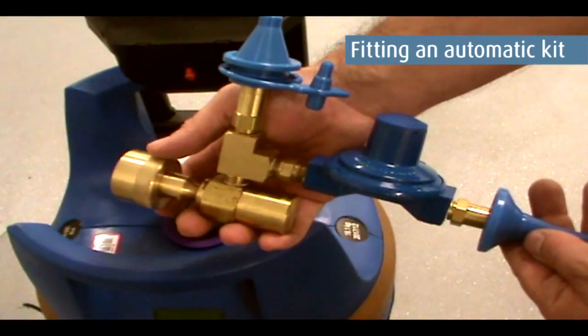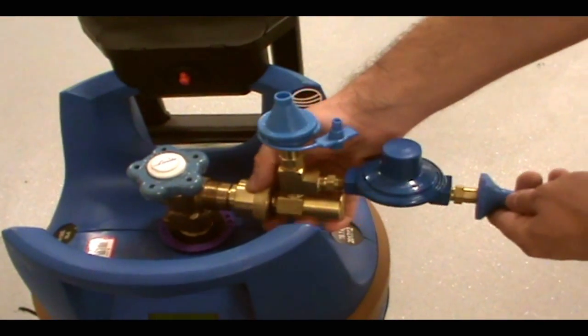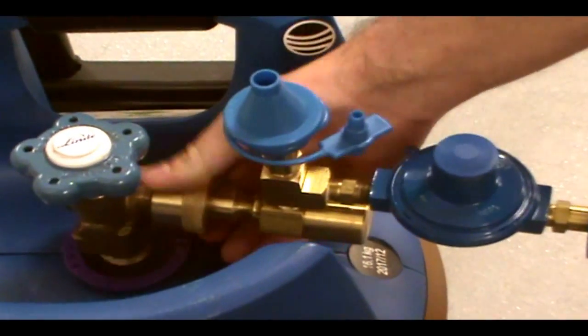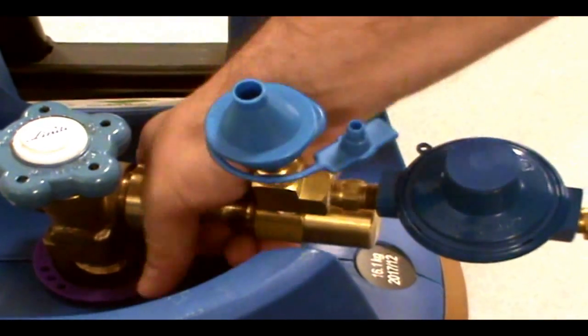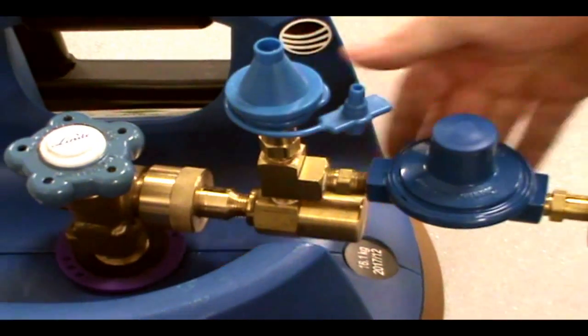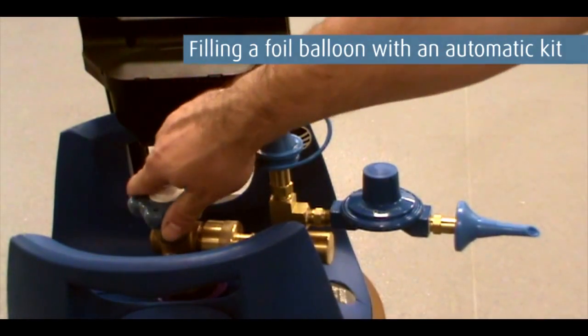To fit the automatic filling kit, insert the end into the Genie valve as shown. Place the threads over the valve and screw on hand tight. Open the valve to release gas into the kit.